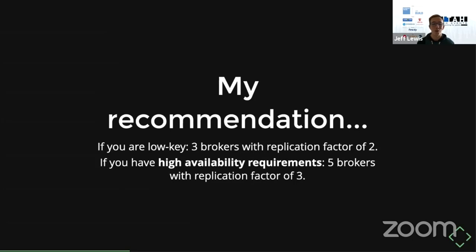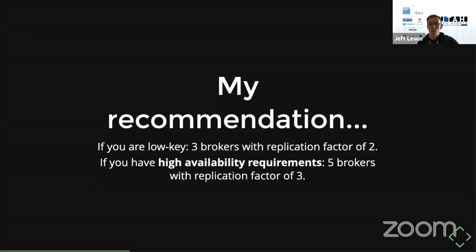If you're just getting your feet wet, I recommend starting with three brokers and a replication factor of two — that's a pretty good setup. But if you have high availability requirements and SLAs in a production environment, you'll want five or more brokers with a replication factor of three, giving you the ability to have two brokers go out while still operating at full capacity. It also comes down to throughput, number of producers and consumers, and how much data you're working with.